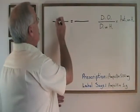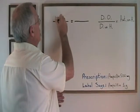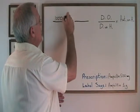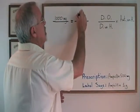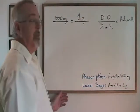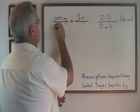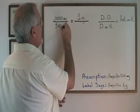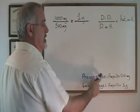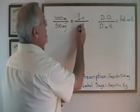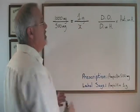So converting milligrams to grams, my conversion is 1000 milligrams is equal to 1 gram. Therefore, 500 milligrams, the amount the prescription is asking for, is equal to an unknown number of grams.